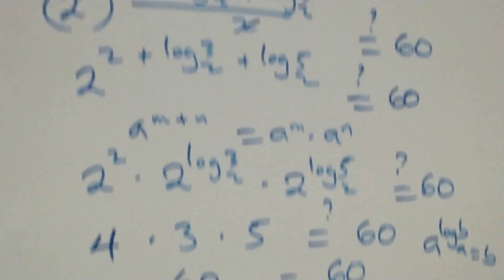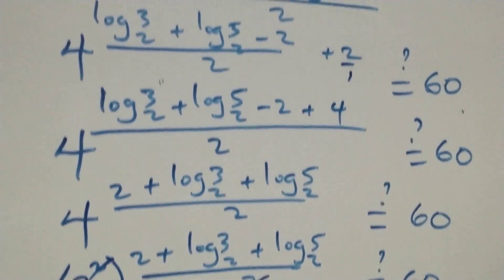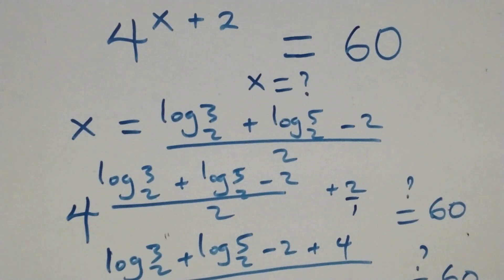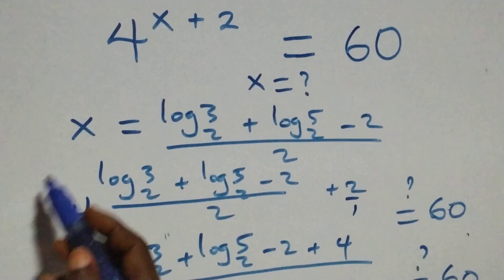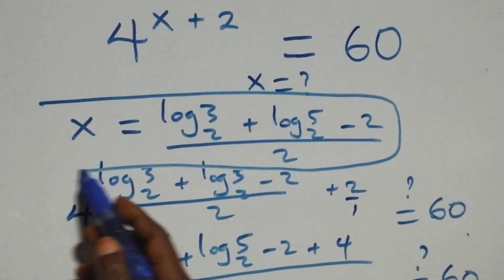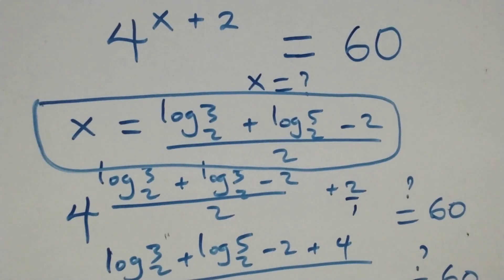Therefore we conclude that x equals (log₂3 plus log₂5 minus 2) all over 2 satisfies the given problem. Thank you for watching — don't forget to subscribe for more videos, turn on the notification bell, share this video, and put your comment. See you next time, bye for now.